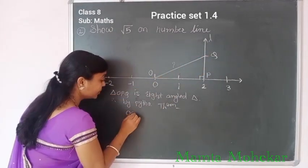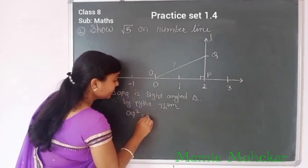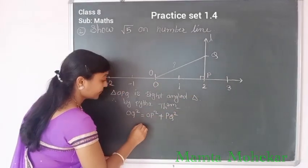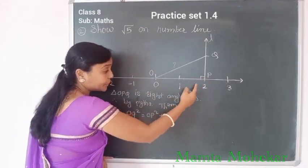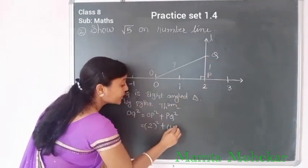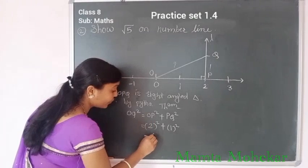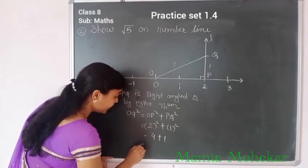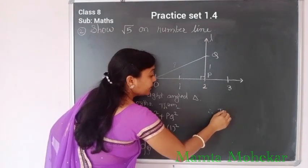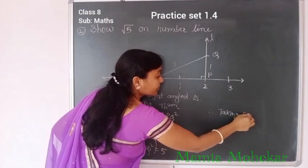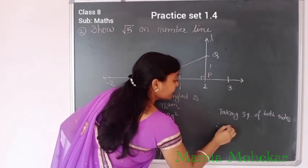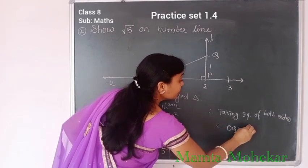By Pythagoras theorem: hypotenuse OQ² = OP² + PQ². We take OP as 2 units, so 2² plus PQ = 1 cm, so 1². That gives 4 + 1 = 5. Therefore OQ² = 5. Taking square root of both sides, OQ = root 5.